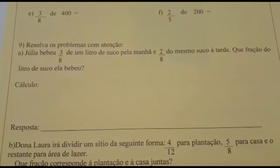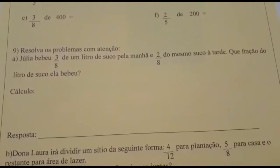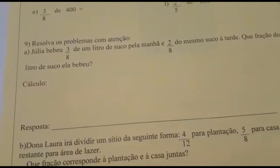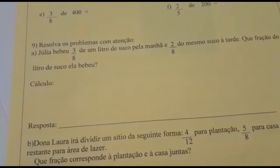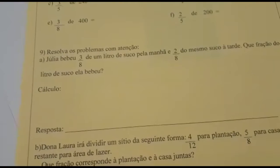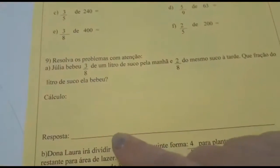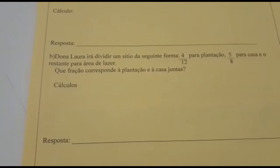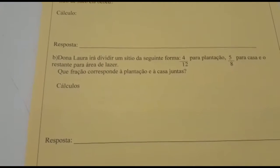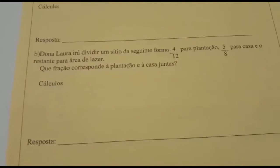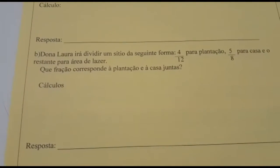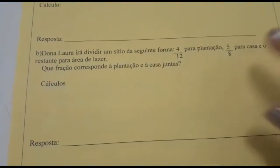Número 9: Resolva os problemas com atenção. Letra A: Júlia bebeu 3 oitavos de 1 litro de suco pela manhã e 2 oitavos do mesmo suco à tarde. Que fração do litro de suco ela bebeu? Vamos fazer o cálculo e colocar a resposta. Letra B: Dona Laura irá dividir um sítio da seguinte forma: 4 dozeavos para a plantação, 5 oitavos para a casa e o restante para a área de lazer. Que fração corresponde à plantação e à casa juntas? Vai fazer o cálculo e colocar a resposta corretamente.